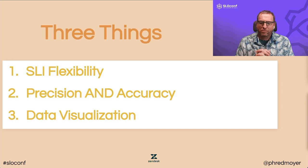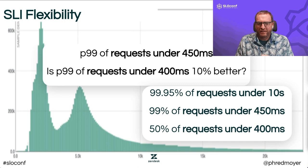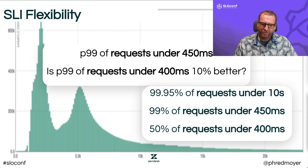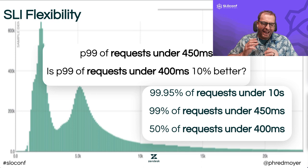I want to talk about three things with percentile-based SLOs versus latency band SLOs. First, SLI flexibility. Say I have a percentile-based SLO where my P99 needs to be under 450 milliseconds. Well, if my P99 comes in at 400 milliseconds, is that 10% better? The answer is you just don't know, because your request latency distribution might have a mode, and 400 milliseconds could lie in the trough between two modes. You met your SLO, but you don't really know by how much.